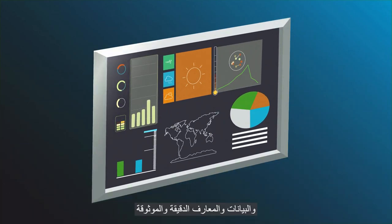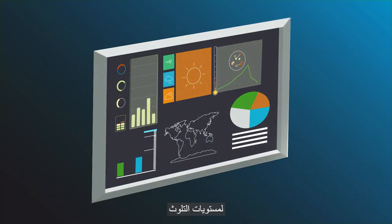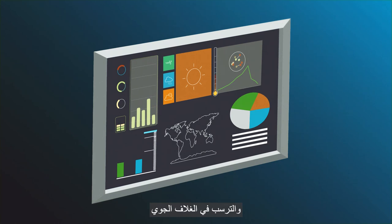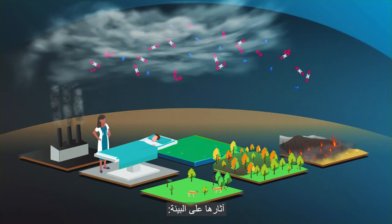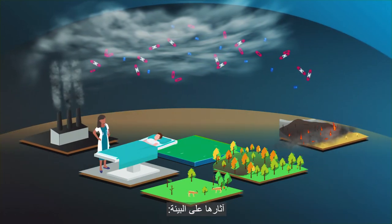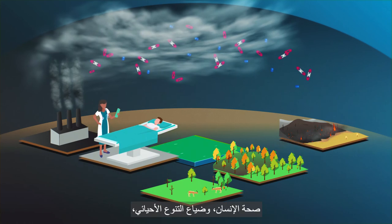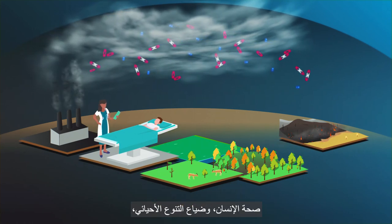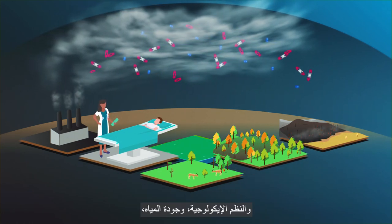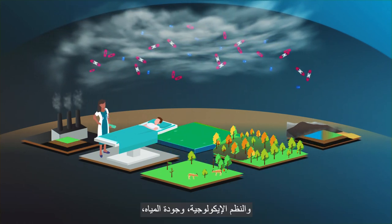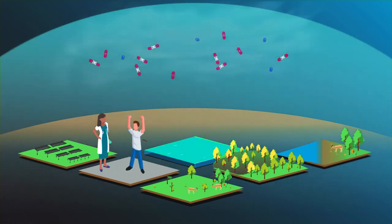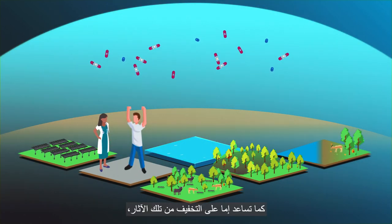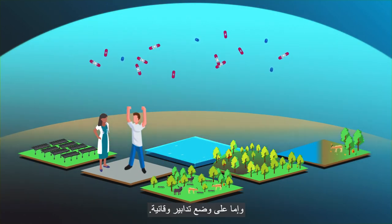Accurate, reliable data and knowledge about the levels of pollution and atmospheric deposition also help us to better understand their impacts on the environment, human health, biodiversity loss, ecosystems and water quality, and to either mitigate those impacts or put protective measures in place.